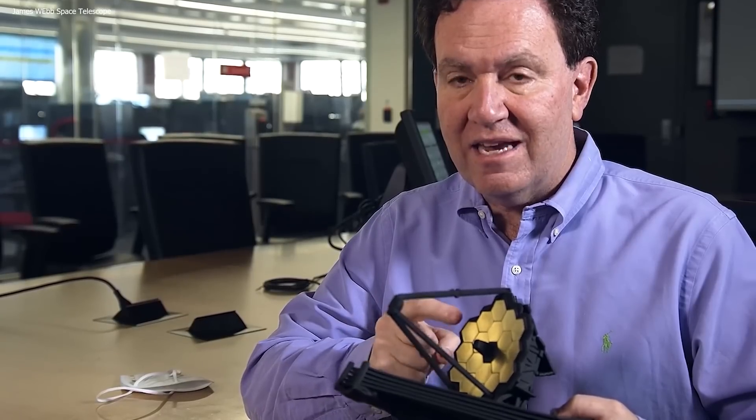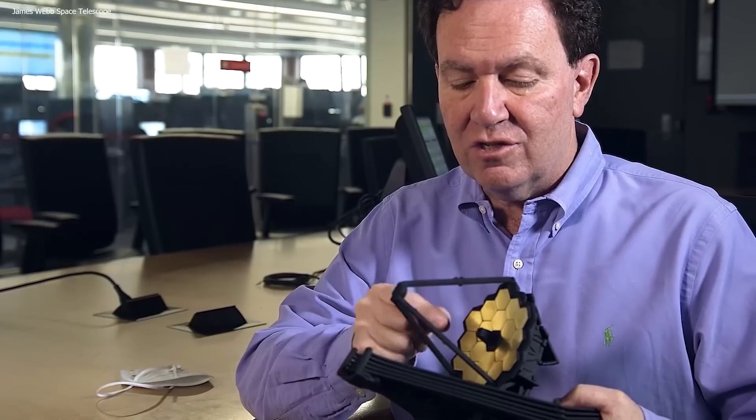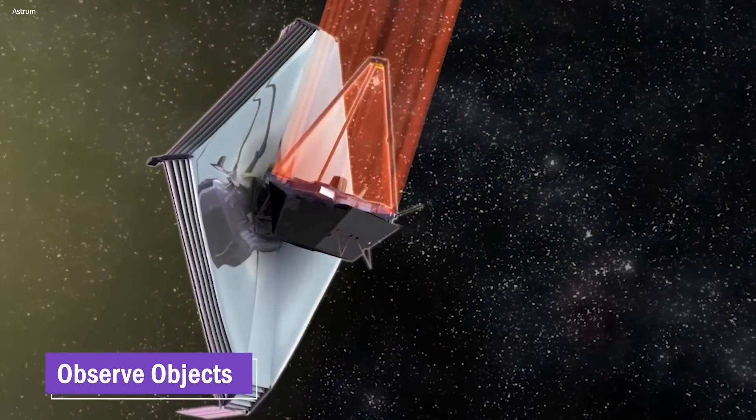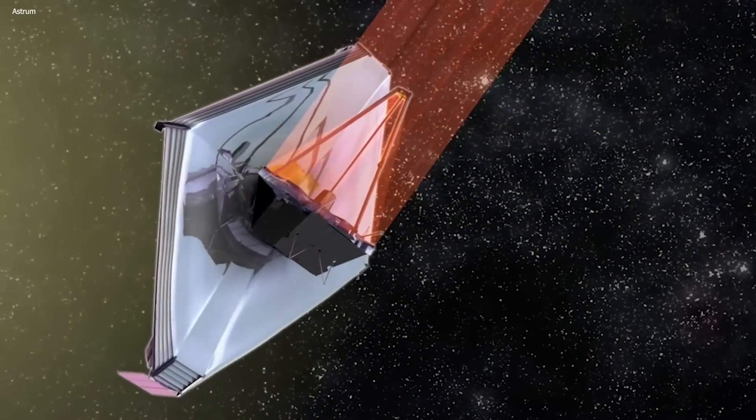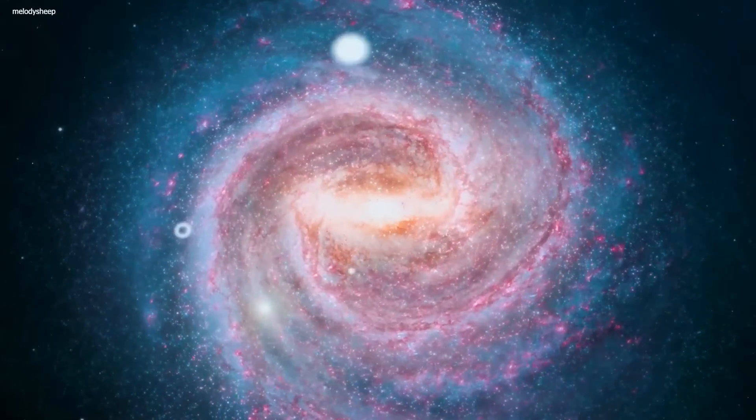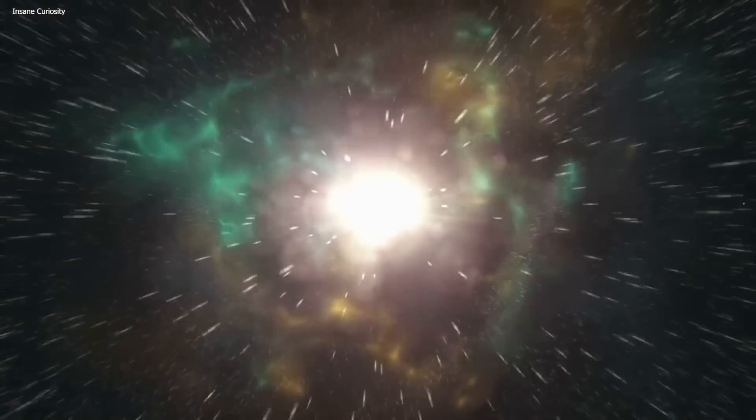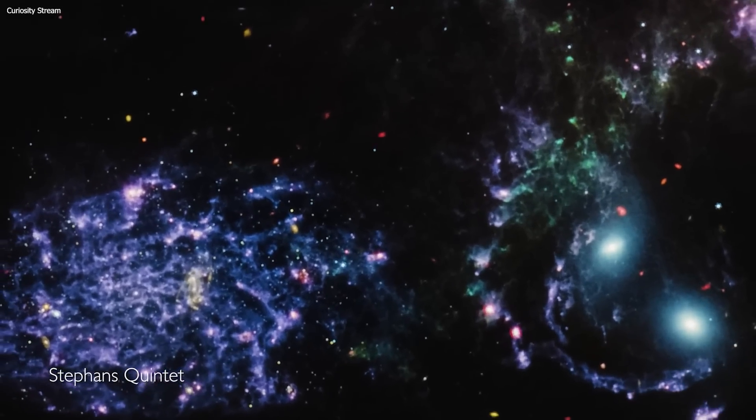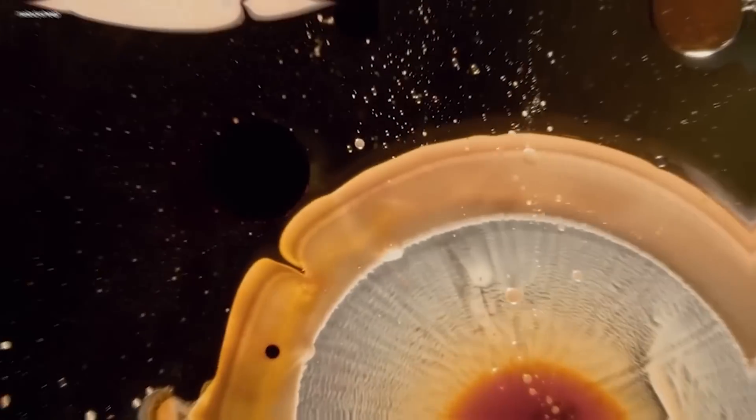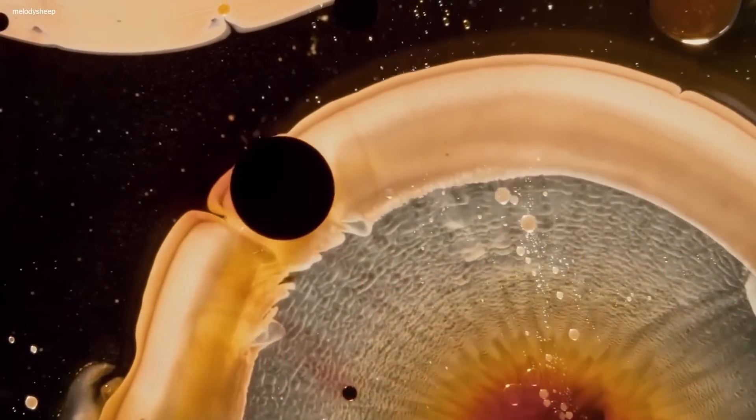One of the JWST's key features is its high-resolution and high-sensitivity instruments, which enable it to observe objects that are too old, distant, or faint for the Hubble Space Telescope. By capturing the faintest signals from celestial objects, the JWST can explore the early stages of the universe, study the formation of galaxies, investigate the atmospheres of exoplanets, and unlock the mysteries of dark matter and dark energy.